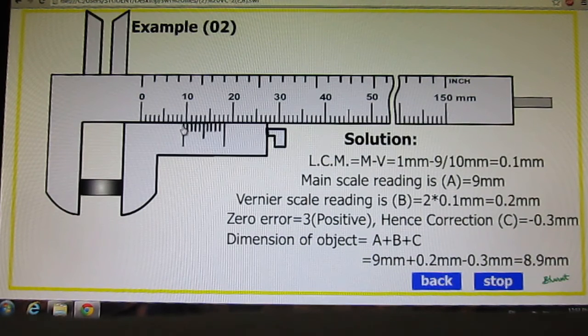This is the first division of vernier scale, it stands here. B is 2. Where is 2? Yes, it is here.